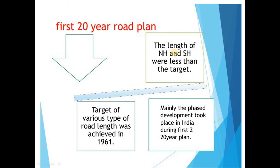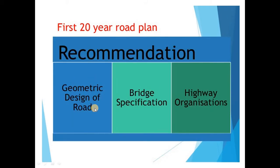The targets included the length of national highways and state highways. Various types of road targets were achieved in 1961. Basic development took place in India during the first 20-year plan. The recommendations included geometric design of roads, range specification, and highway automation.